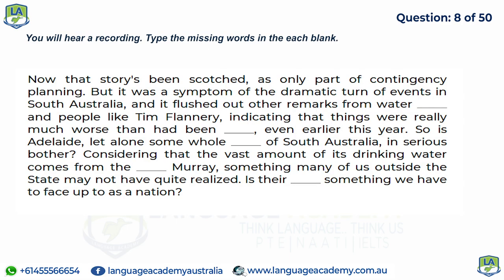That story has been scotched as only part of contingency planning, but it was a symptom of the dramatic turn of events in South Australia. It flushed out remarks from water academics and people like Tim Flannery indicating things were much worse than foreshadowed. So is Adelaide — let alone whole regions of South Australia — in serious bother? Considering that the vast amount of its drinking water comes from the beleaguered Murray, is their predicament something we have to face up to as a nation?